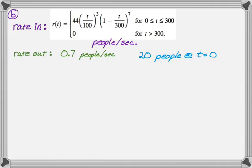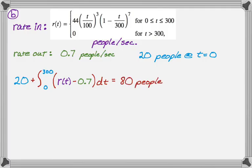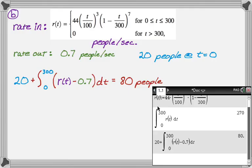So to figure that out, what we'll do is the number of people we start with plus the integral of rate-in minus rate-out over the time interval. So the time interval is 0 to 300, and then it's the quantity rate-in, which is R of T, and then minus the rate-out, so minus 0.7, and then DT. And again, just grab a calculator, and that gives you 80. So let me show you what my calculator looked like, I just punched that straight in, the calculator gave me the answer, and we're on to part C.